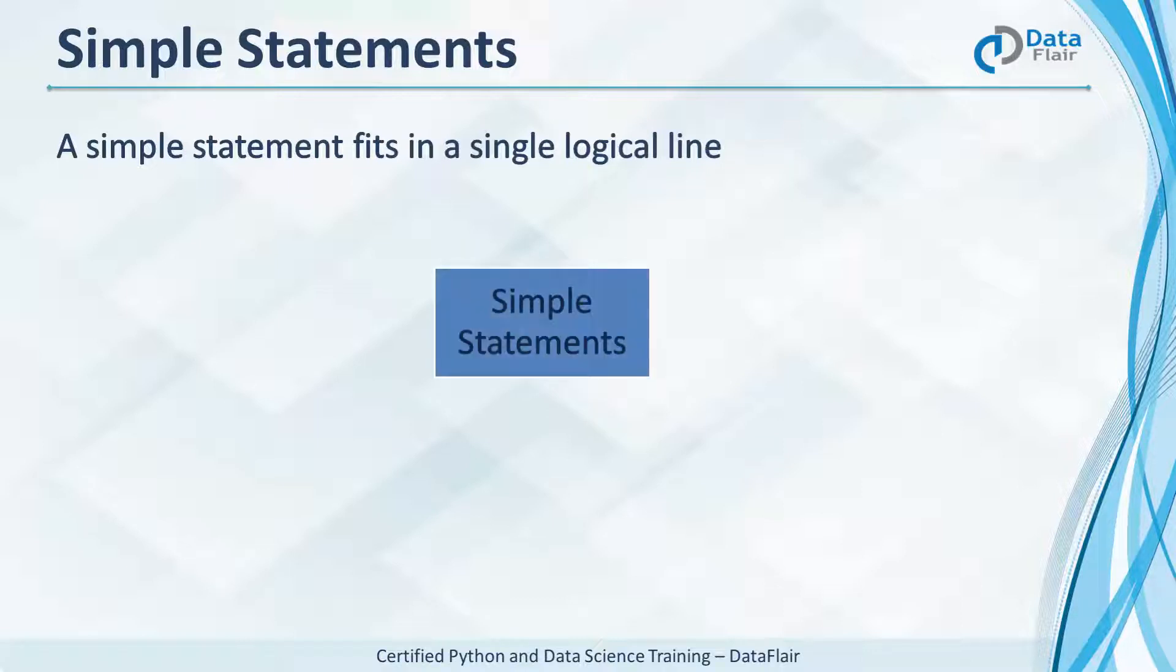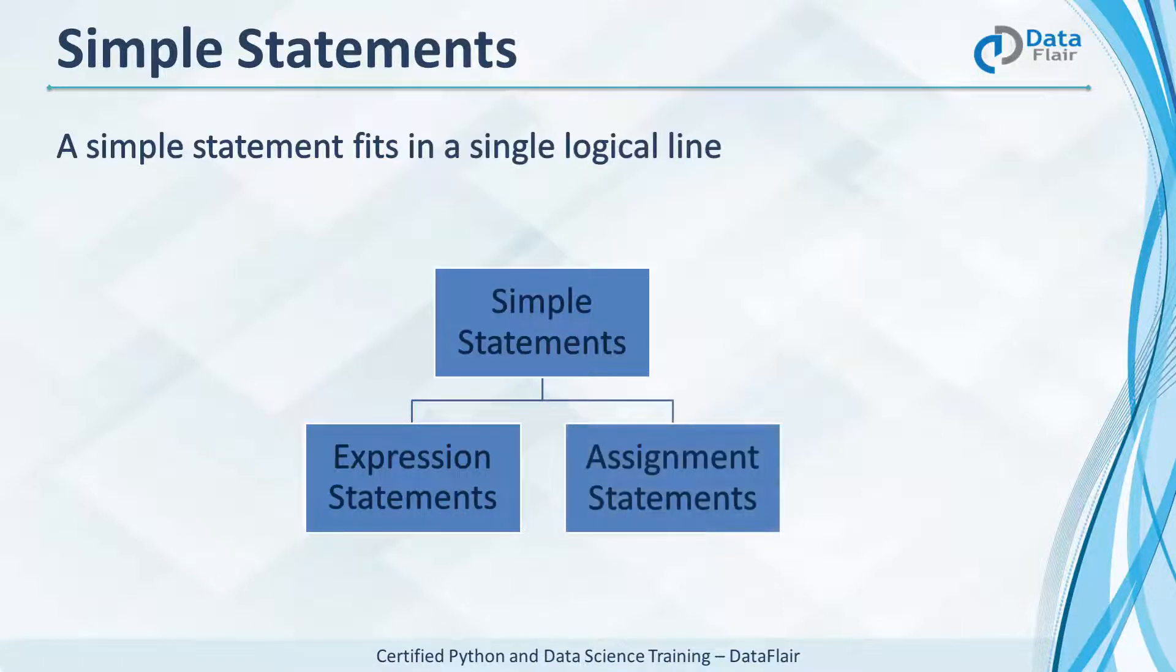Now simple statements are of two kinds, expression statements and assignment statements. Expression statements are the ones to compute a value or to call a function, say 2 plus 3 or print hello. And assignment statements help assign values to variables.